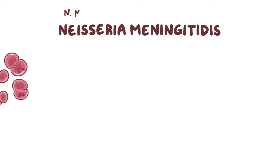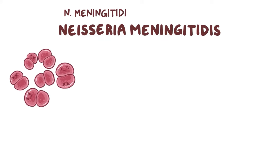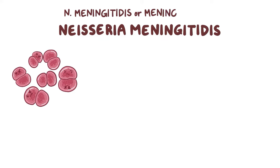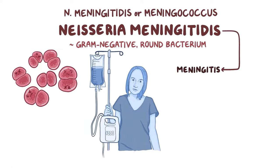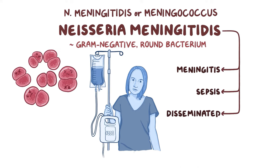Neisseria meningitidis, also called N-meningitidis, or just meningococcus, is a gram-negative round bacterium that causes meningitis in humans, as well as life-threatening conditions like sepsis and disseminated intravascular coagulation.